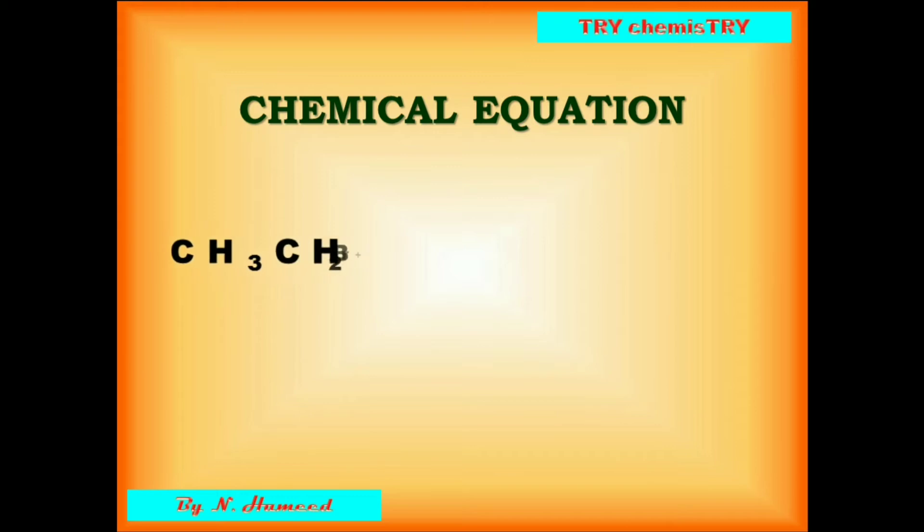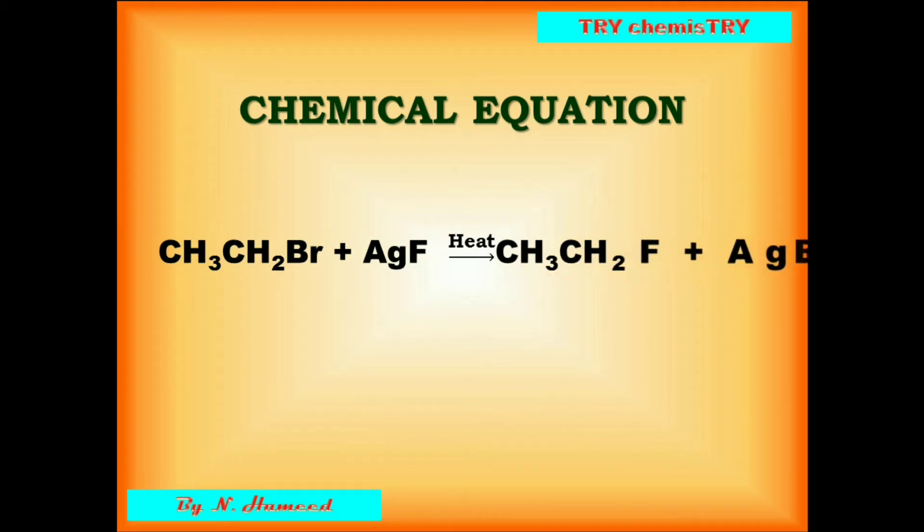Bromo or chloro ethane on heating with silver fluoride gives fluoro ethane and silver bromide. Here, halogen exchange method takes place. From the bromo ethane, we can prepare fluoro ethane.